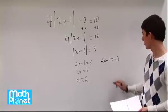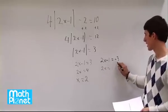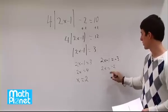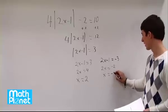On this side, same process. Add 1 to both sides, 2x equals negative 3 plus 1 is negative 2. Divide by 2 on both sides gives us x equals negative 2 divided by 2 is negative 1.